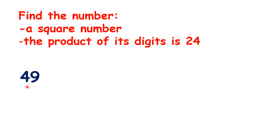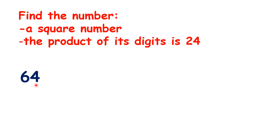Now, forty-nine is our next square number, because seven times seven is forty-nine, but four times nine is thirty-six. Now, eight times eight is sixty-four, so sixty-four is a square number, and six times four is twenty-four, so we have our answer.